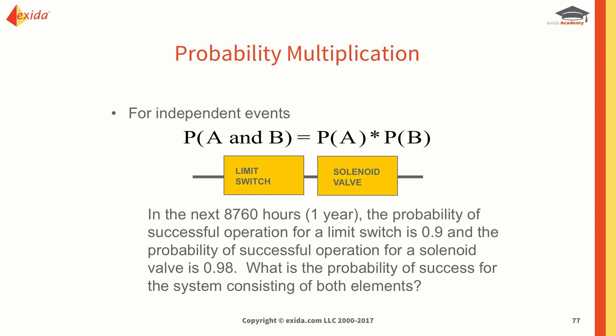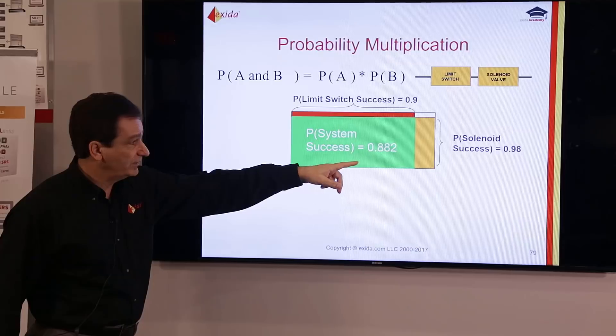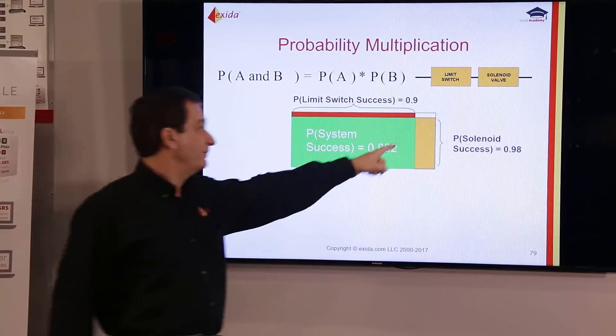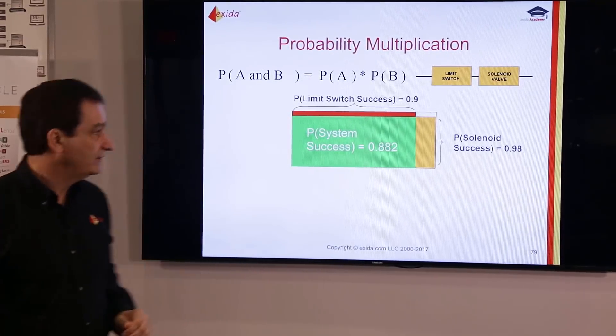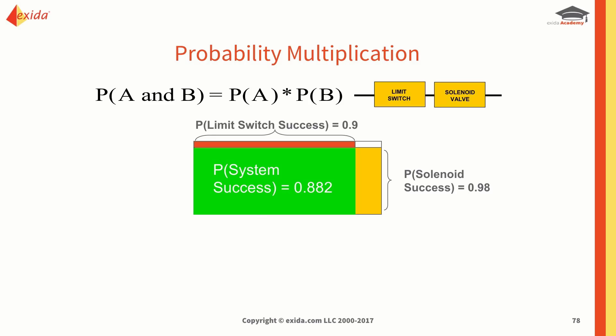Assuming one year is 8760 hours, the probability of successful operation for the limit switch is 0.9 in the first year and for the solenoid valve is 0.98. The probability of success for the system is P(A) times P(B), which equals 0.882. Using our complement rule, if the probability of system success is 0.882, the probability of failure is 1 minus 0.882.